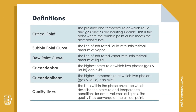Before we move on, let's do a recap of the definitions. A critical point is the pressure and temperature at which the liquid and gas phases are indistinguishable — that's the point where the bubble point curve meets the dew point curve. A bubble point curve is the line of saturated liquid with very small amounts of vapor. A dew point curve is the line of saturated vapor with very small amount of liquid — meaning if you cross over to the right of the dew point curve, you will always have gas.